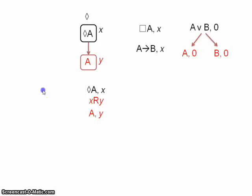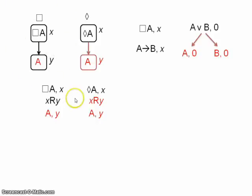How about necessity? Let's say we have necessarily A, X. Well, in our previous tree method, we can do nothing until our world accesses some other world. So that is until we've already got an arrow and a new world. In this tree method, I think you could probably work out that we do nothing unless we already have X, R, Y on our tree. So once we've got necessarily A, X, and we've got X, R, Y, then we derive A, Y. In our previous tree form, it would look like this.